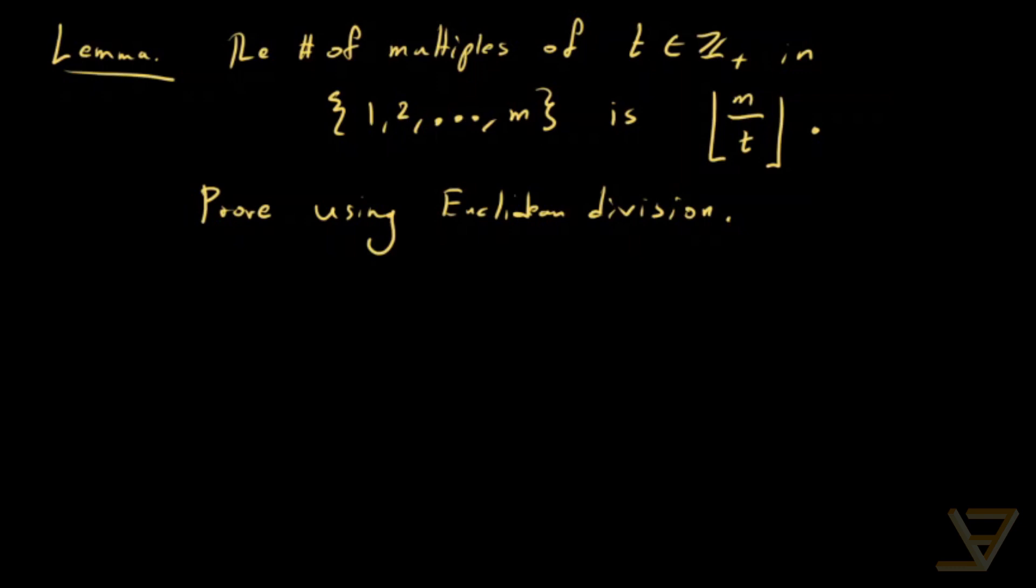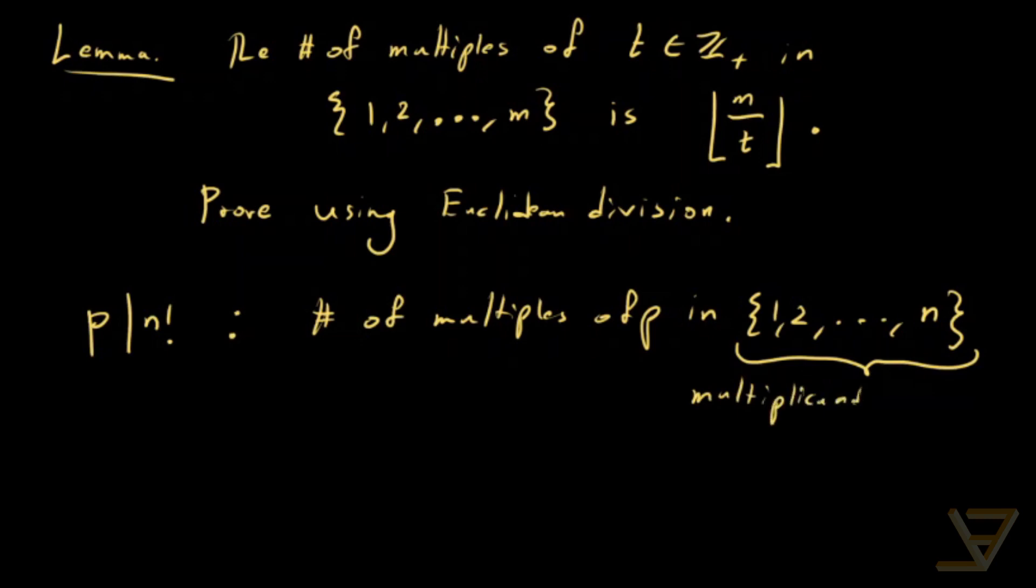Now, as an approximation of how many times p divides n factorial, consider the number of multiples of p in 1, 2, all the way through to n. Because these are all factors, or I shouldn't use the word factor, I should use the word multiplicand, multiplicands of n factorial. So that would be n divided by p floor function.